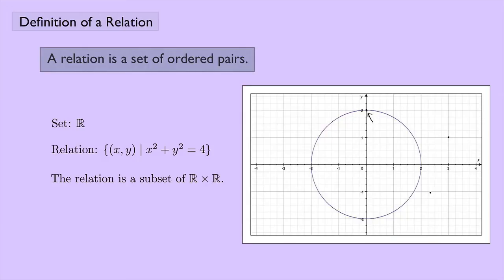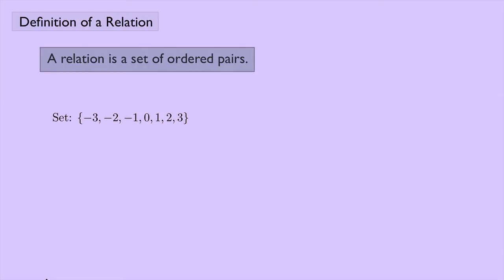How about if we let the set S be the set {-3, -2, -1, 0, 1, 2, 3}. And then the relation would be the set of ordered pairs (-3, 1), (-1, -1), (-1, 2), (2, 2), and (3, 0).